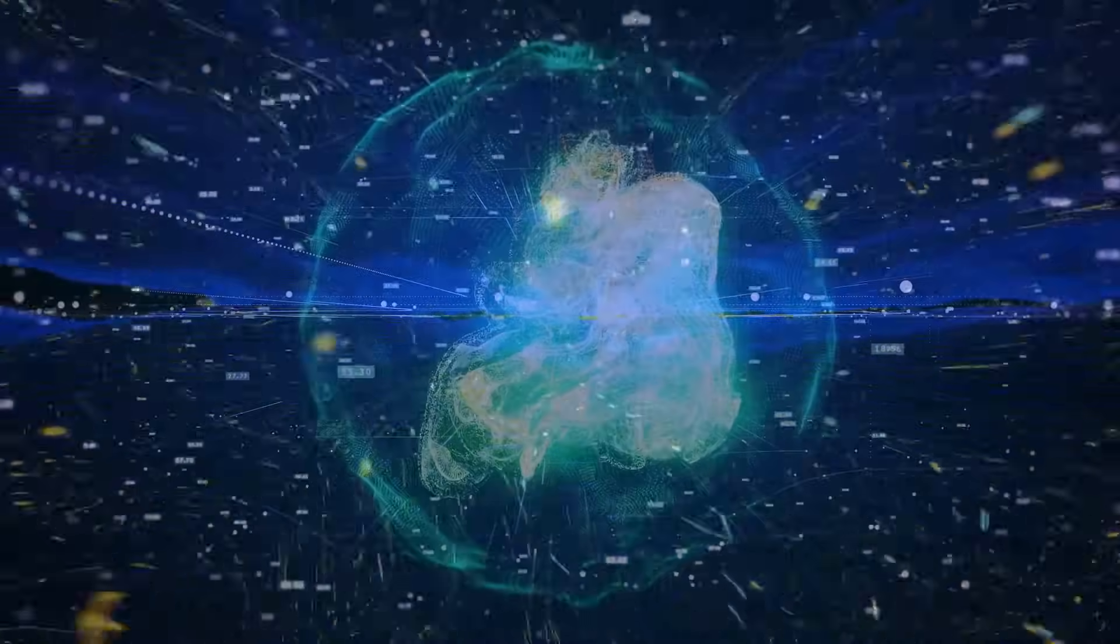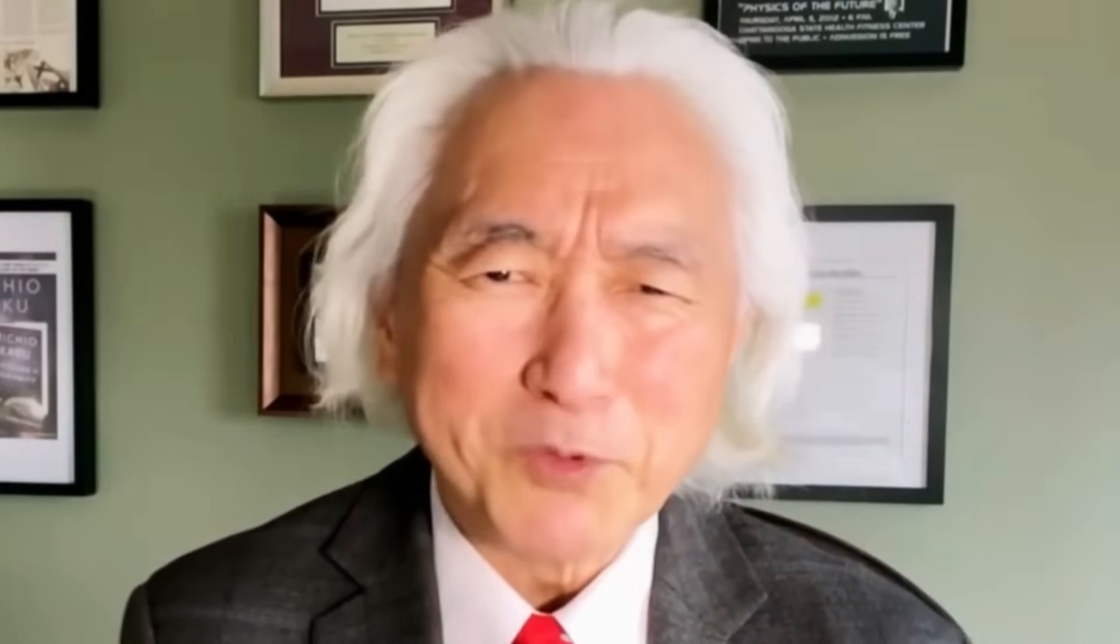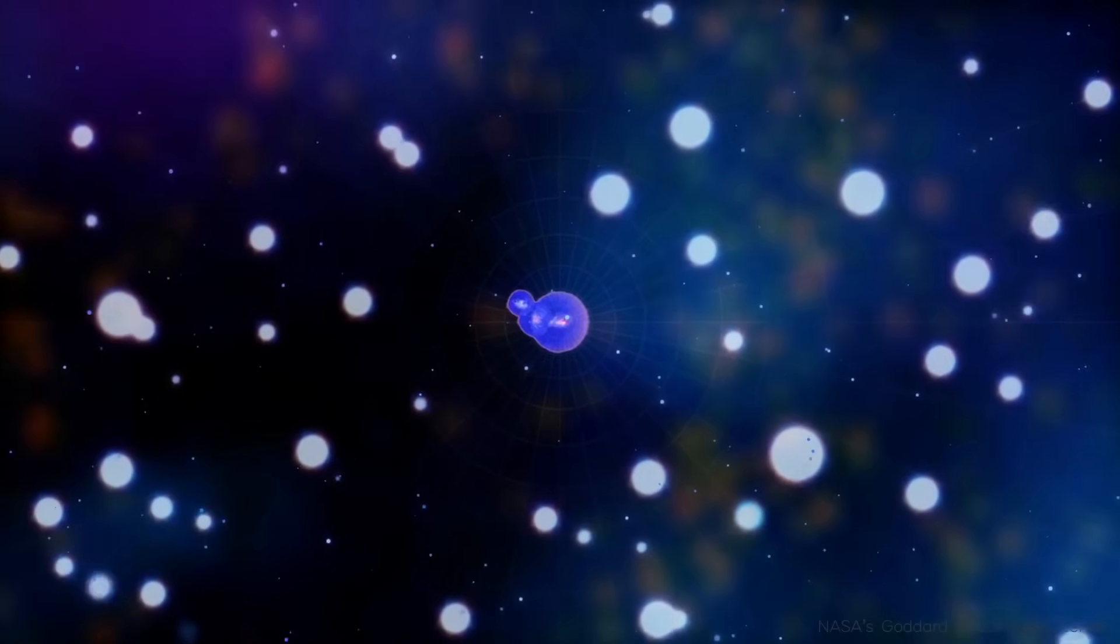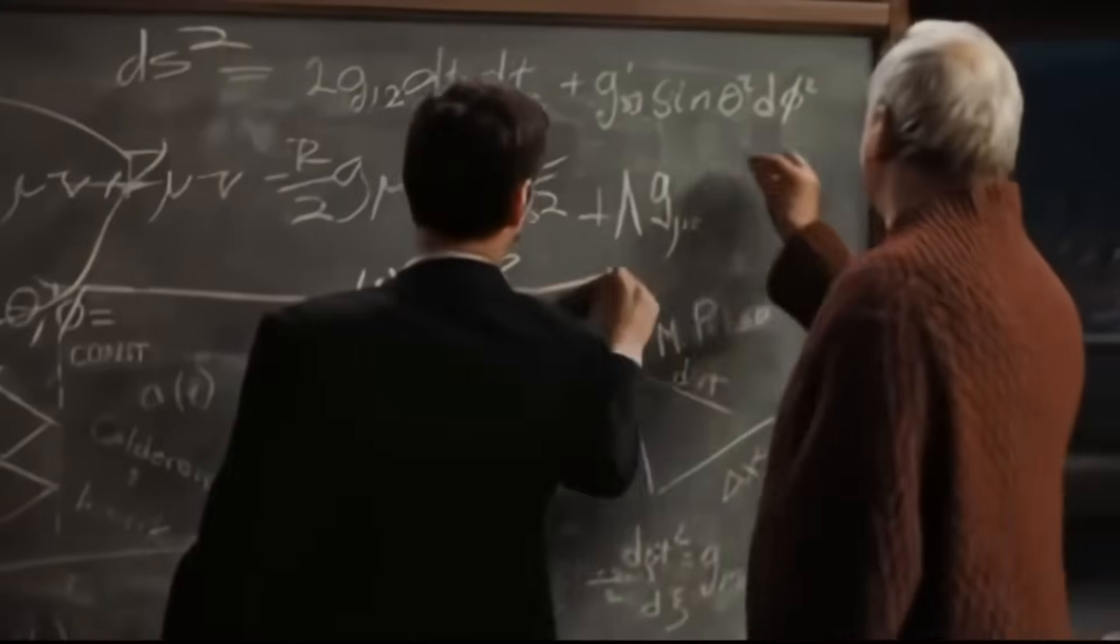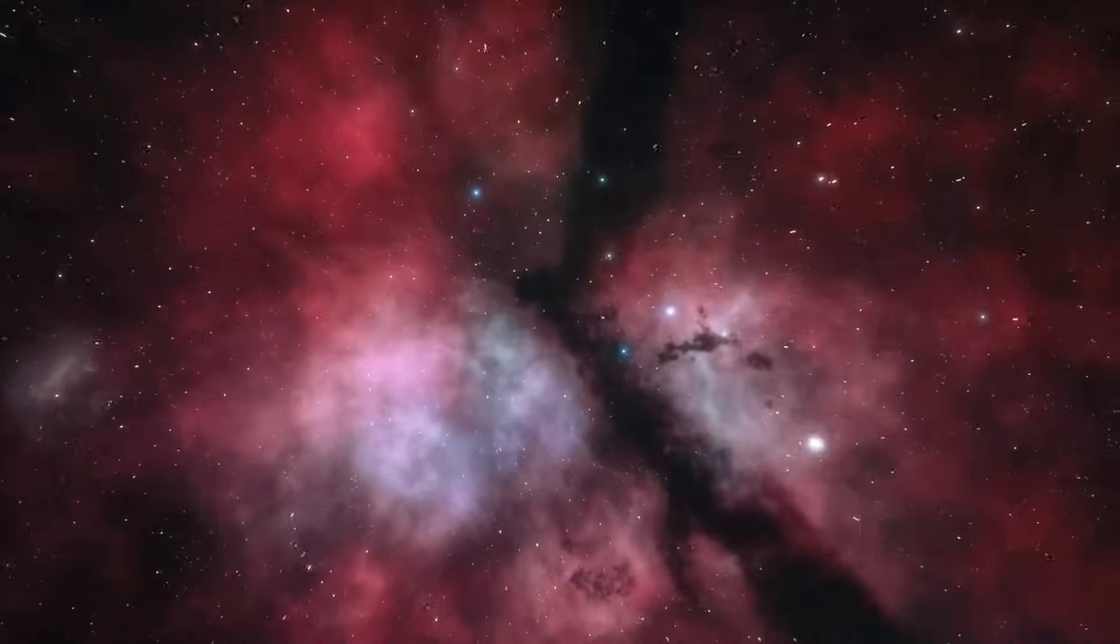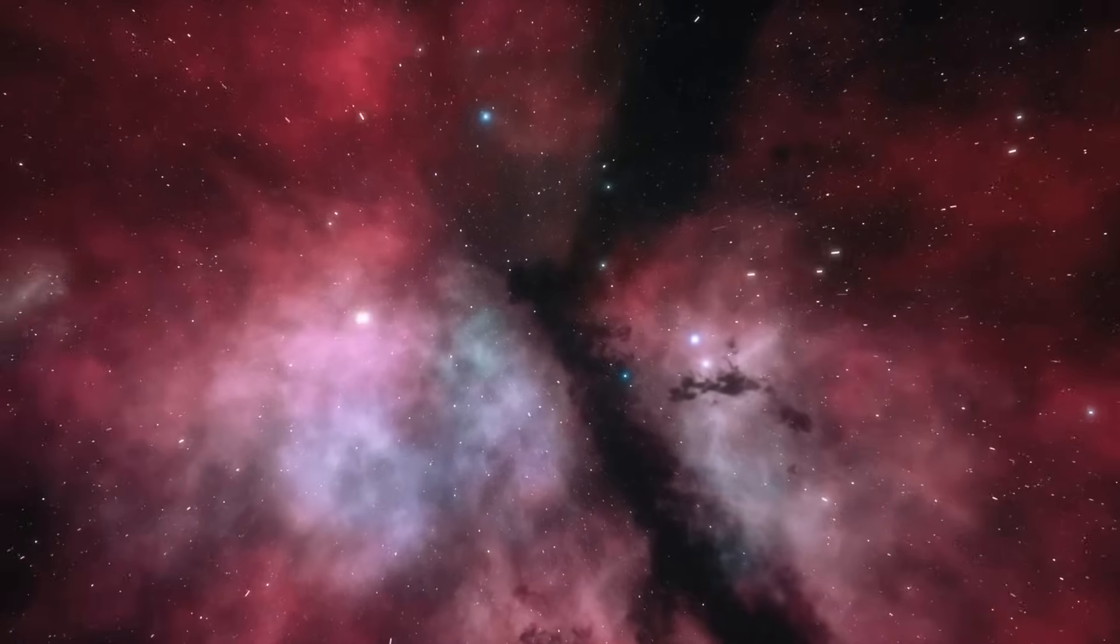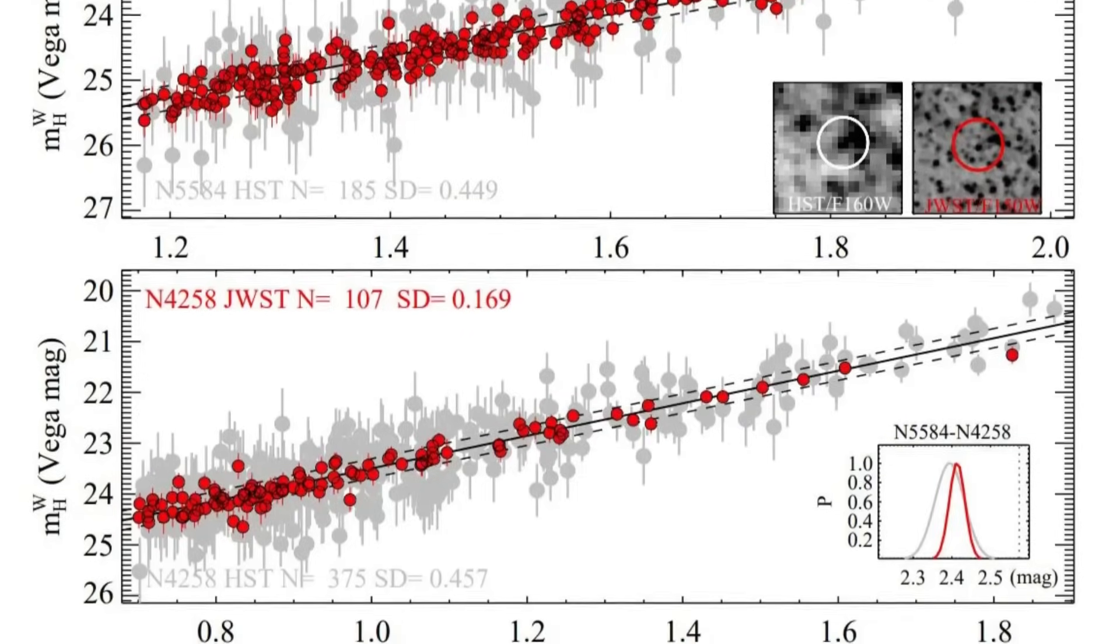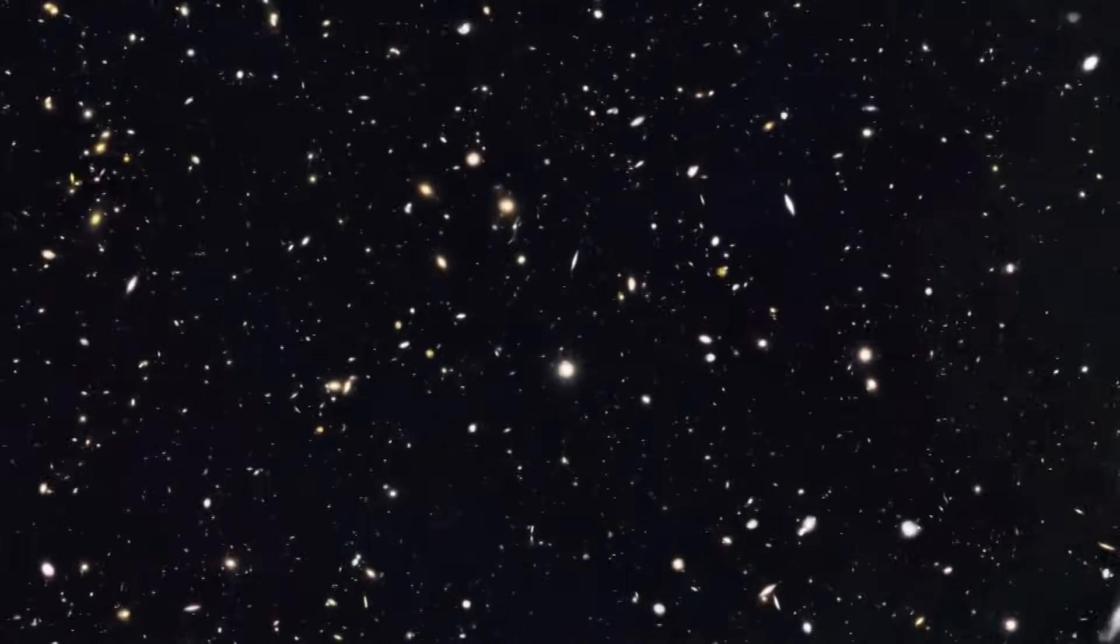Then there are quantum anomalies. Some experiments in quantum mechanics have suggested that particles behave as if they're influenced by hidden variables, something outside of our observable reality. Could it be that these particles are interacting with alternate versions of themselves in parallel universes? And what about the mysteries of dark matter and dark energy? Together, they make up 95% of the universe, yet we can't see or directly detect them.